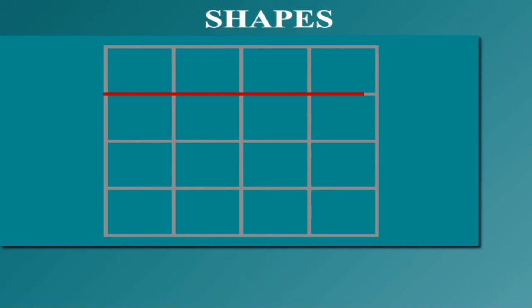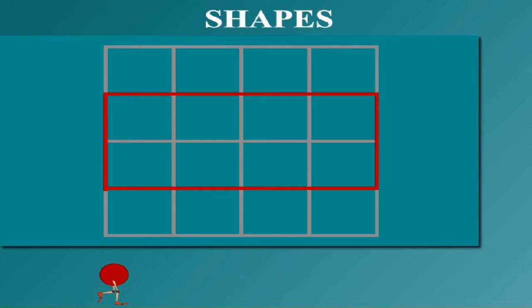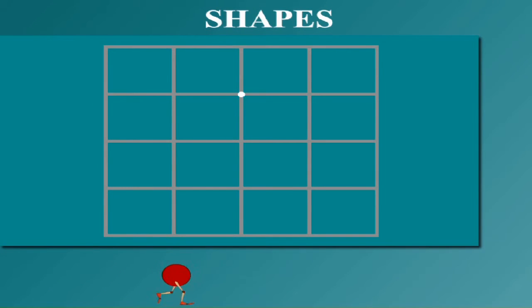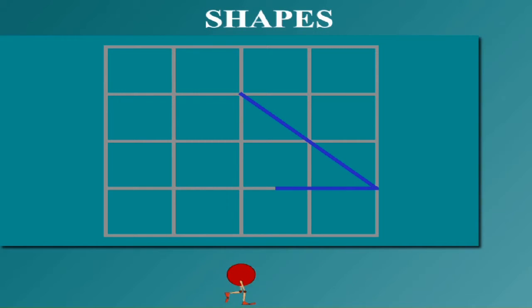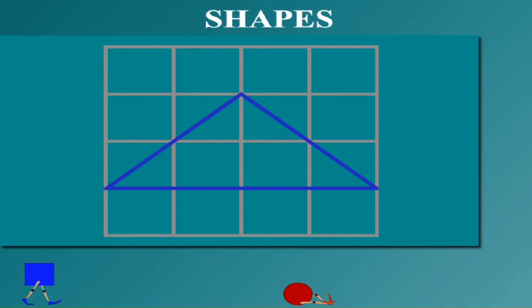This is a rectangle with four straight lines. The pointer is making a triangle with three straight lines.